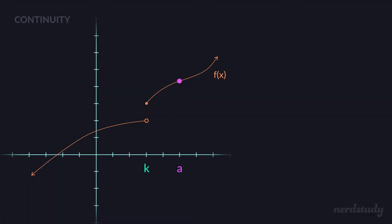When we're talking about the idea of continuity at a point, we might already have somewhat of an intuitive sense for this. One way to look at this in a very casual and graphical way would be to think of that point that we're looking at when it comes to continuity, and just think of it as striking a line through that point.